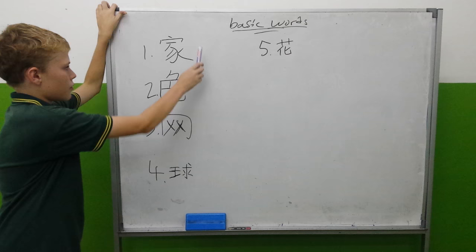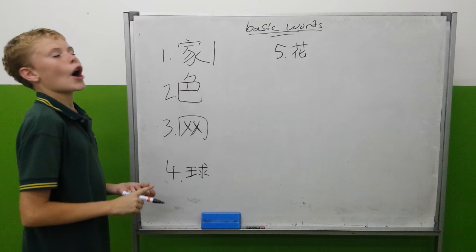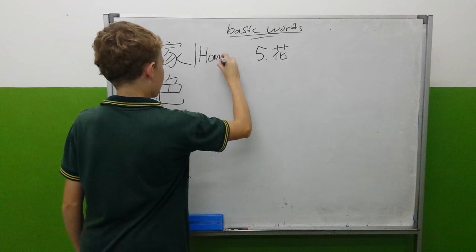I've planned out five words for us to learn today. The first word for us to learn today is 家. 家 means home.